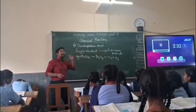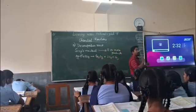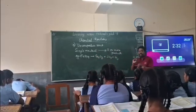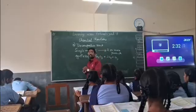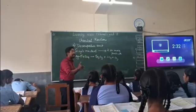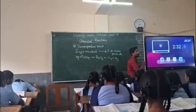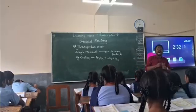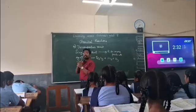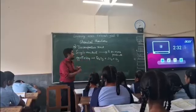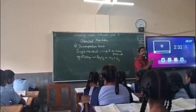There are three more types in the decomposition reaction. First is the photolytic decomposition. Second is the electrolytic decomposition. Third is the thermal decomposition — thermal decomposition takes place in the presence of heat. Photolytic decomposition takes place in the presence of light. And electrolytic decomposition occurs in the presence of electric current. These are the basic things for the decomposition reaction.